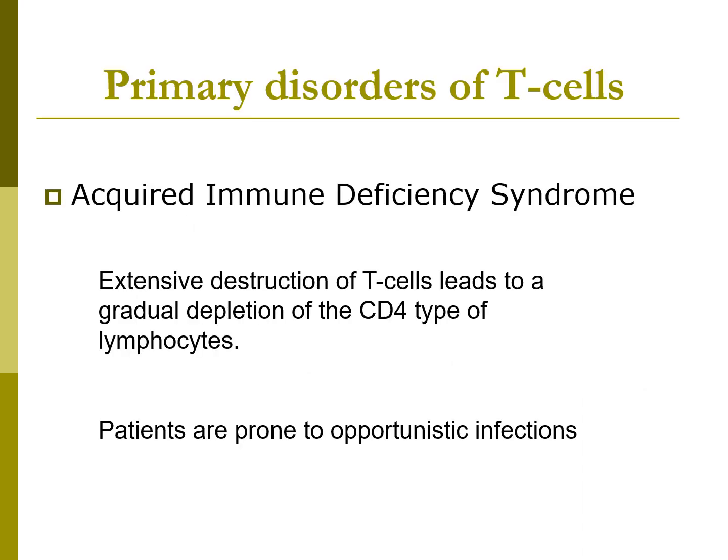One primary disorder of T-cells is Acquired Immune Deficiency Syndrome, or AIDS. 36 million people are living with HIV, and 1.6 million people die every year from AIDS-related diseases. The clinical picture is extensive destruction of T-cells, leading to gradual depletion of CD4 lymphocytes and the destruction of most T-helper cells. AIDS is the leading cause of death in Africa and the fourth leading cause of death in the world. There are 1.2 million people in the U.S. with HIV.